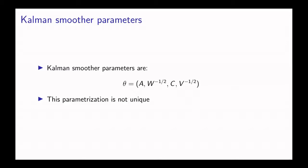The parameters in a Kalman smoother, as we said before, are the dynamics matrix, the measurement matrix, and the covariance matrices.